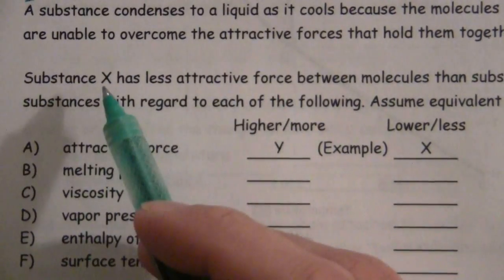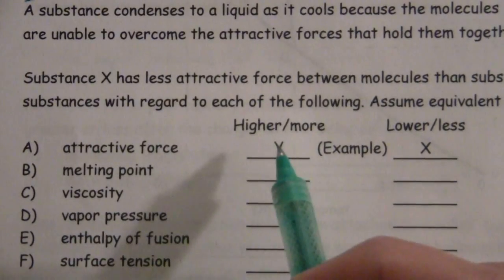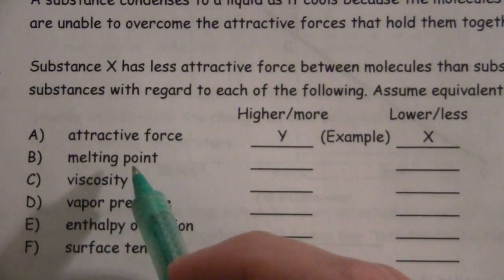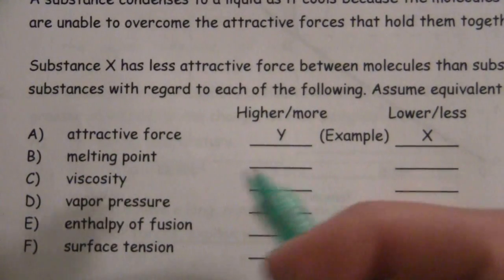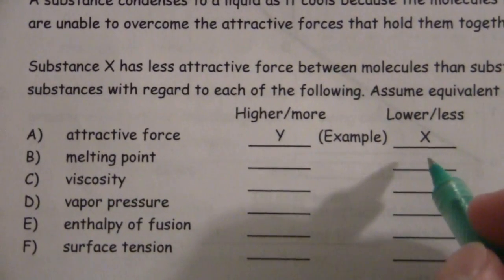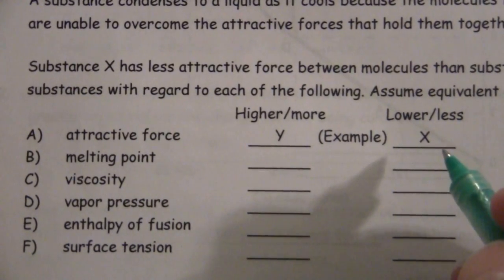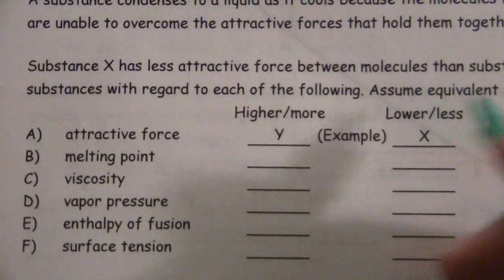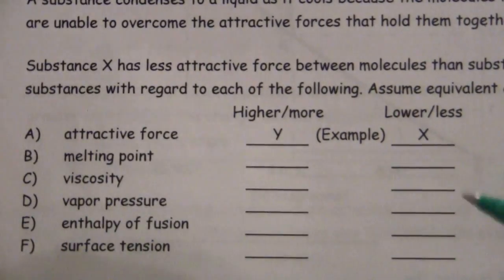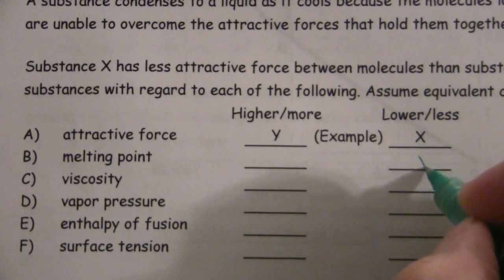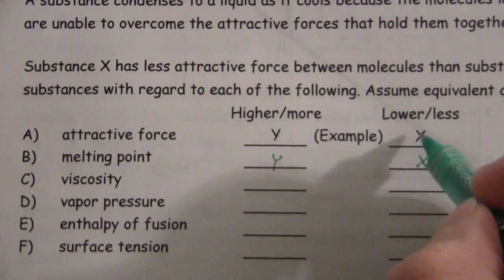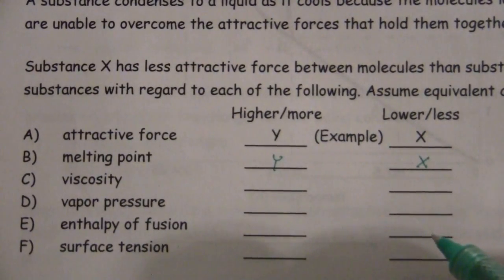Attractive force, of course I'm telling you in the problem X is less than Y. So if you have less force of attraction between the molecules, the melting point is going to be achieved more readily and so it'll be lower. There's less attraction so there's less holding the molecules together and as it gets more energy it will overcome them easier. So the one with lower attractions, X, will also have the lower melting point.